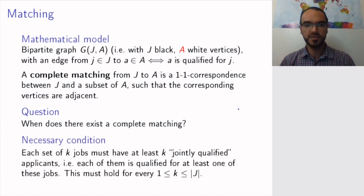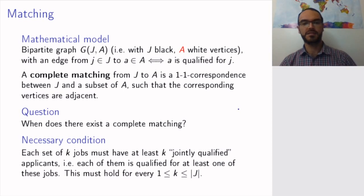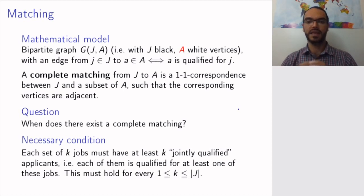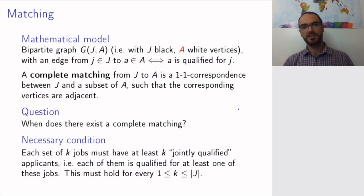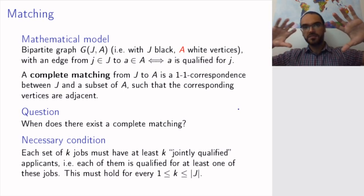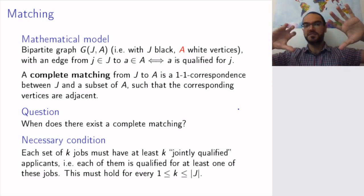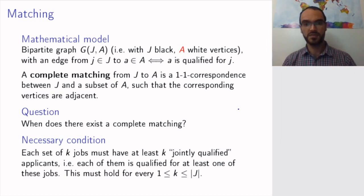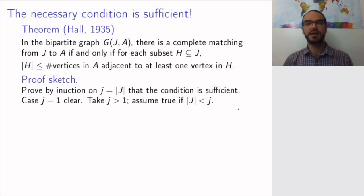The question we are asking is: when does there exist a complete matching for a given problem? An obvious necessary condition is that each set of k jobs must have at least k jointly qualified applicants — meaning a set of k applicants such that each applicant is qualified for at least one of these jobs — and this must hold for any subset k. If you have a set of five jobs where only four applicants are qualified for any of these five jobs, you cannot fill five jobs with four applicants. So this necessary condition must hold for any subset of jobs. The remarkable thing is that this necessary condition is in fact sufficient.